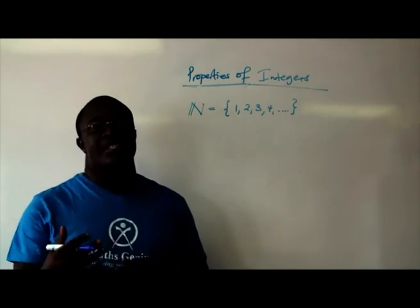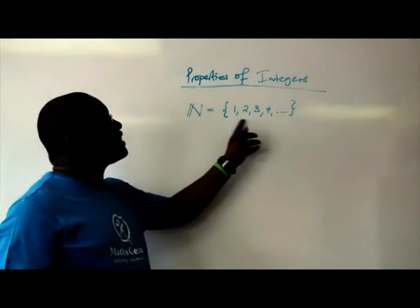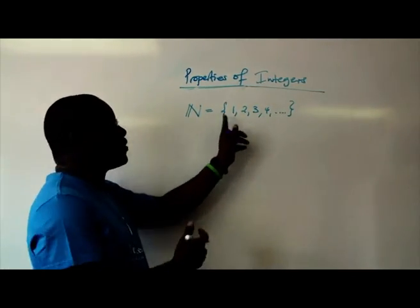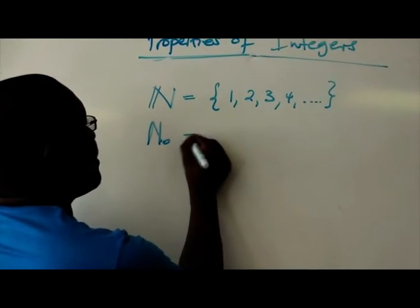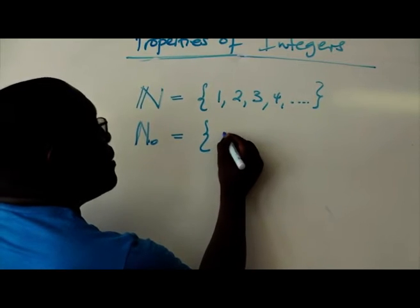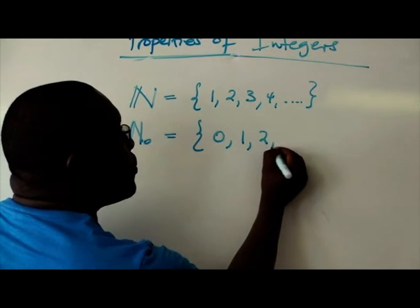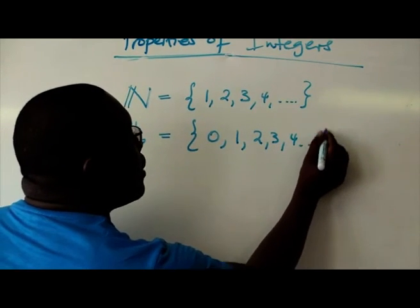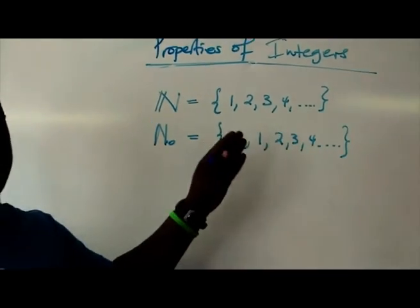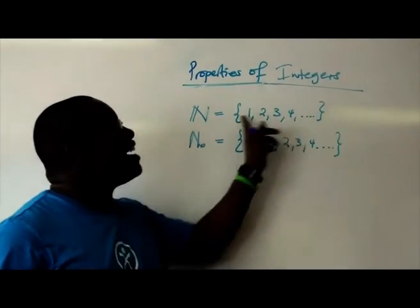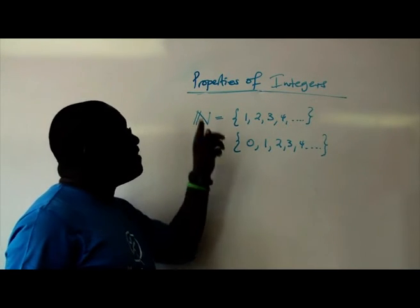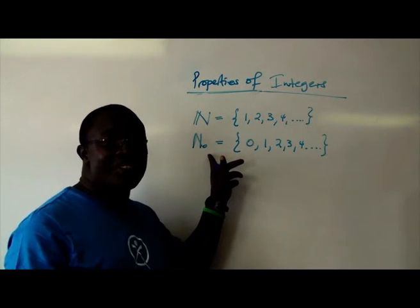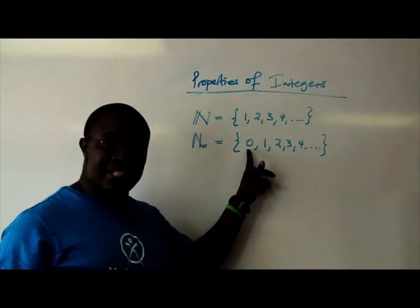And then we found that they are whole numbers. Where it was an extension, we added zero to this set. So whole numbers is equal to 0, 1, 2, 3, 4. Remember, if anyone is to ask you, what is the difference between natural numbers and whole numbers? You just say that whole numbers are an extension of natural numbers with the inclusion of zero. That is precise.